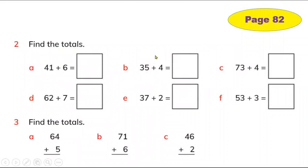Now question number two on page 82: 'Find the totals.' Total means add two numbers together. Here we have 41 and 6 — 41 and 6, how many all together? There are different ways: you can use the number line, you can add on your fingers, or you can make parts.